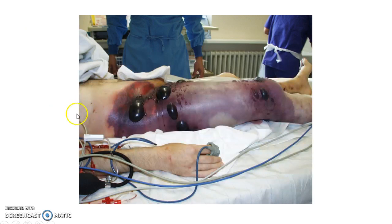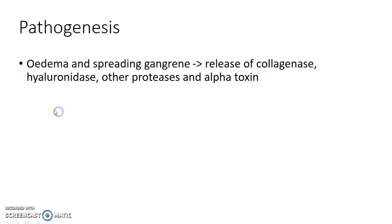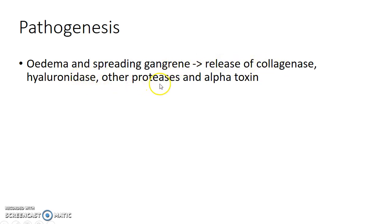This picture shows a patient with gas gangrene. Now let us see about the pathogenesis. The edema and spreading gangrene is caused due to the release of collagenase, hyaluronidase, other proteases, and alpha toxin by Clostridium perfringens.